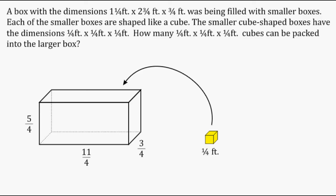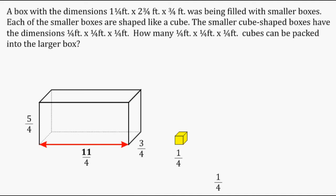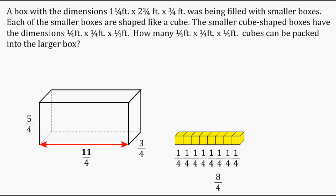Let's see how many cubes we can stack going from left to right. If we put two boxes next to each other we have two quarters, then three quarters, four, five, six, seven, eight, nine, ten, and eleven quarters. So we can stack eleven cube-shaped boxes in this direction and they fit nice and snug.